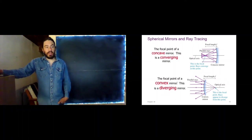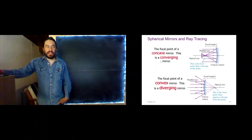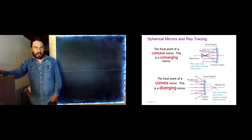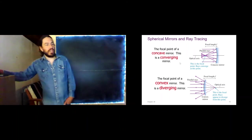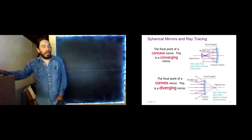Mirrors can also be either converging or diverging. We have to be a little bit careful because a concave mirror refers to its shape. A concave mirror has this little hole — looks like a cave. However, a concave mirror is a converging mirror, and a convex mirror is a diverging mirror. We call it converging because parallel rays that hit the mirror will be focused down and will all converge to a point.